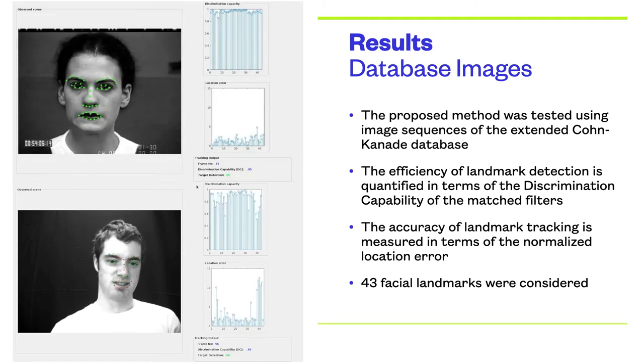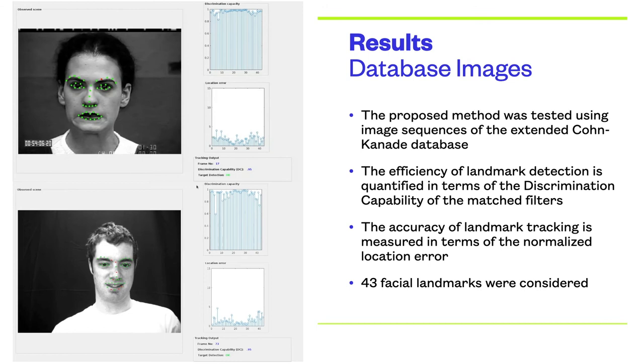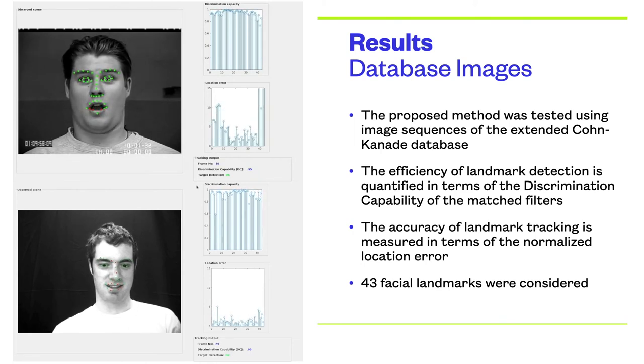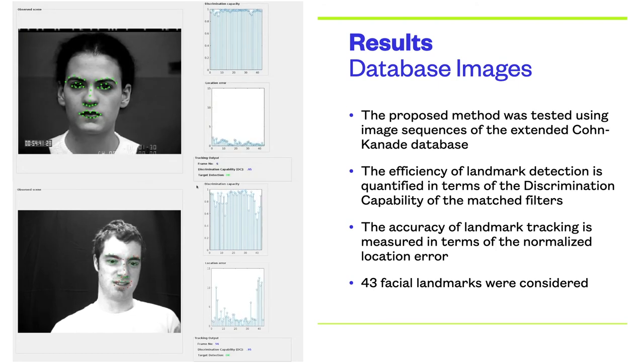It can be seen that the adaptive matched filters detect all landmarks by producing high discrimination capability values, even when the face image suffers from different appearance modifications. Additionally, the detected landmarks are accurately tracked by producing low location errors.